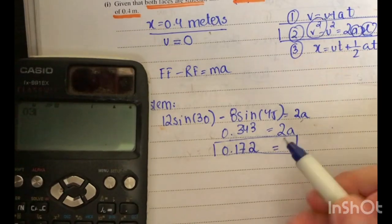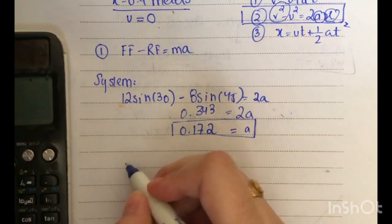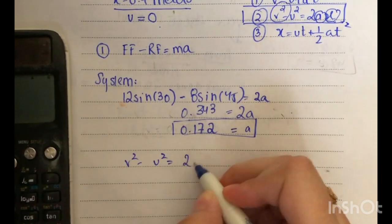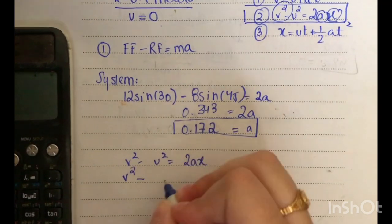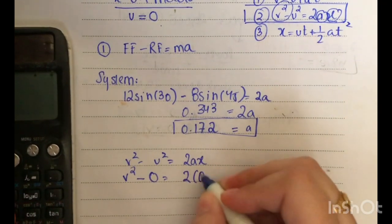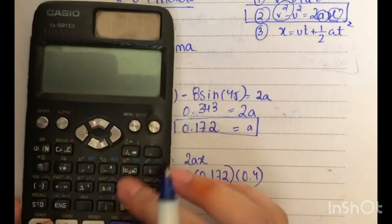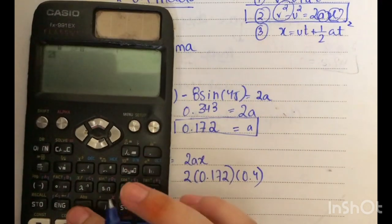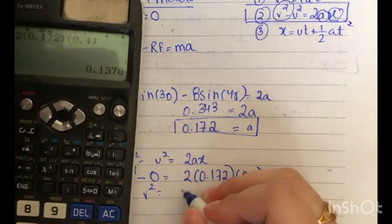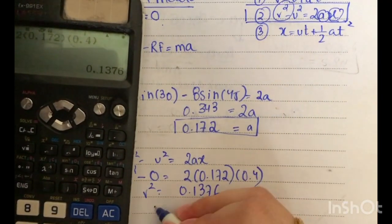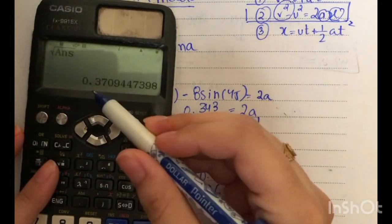Now we have the acceleration and the distance travelled, so we use v² − u² = 2ax. With u = 0, a = 0.172, and x = 0.4: v² = 2 × 0.172 × 0.4 = 0.1376, giving a final speed of approximately 0.371 m/s.